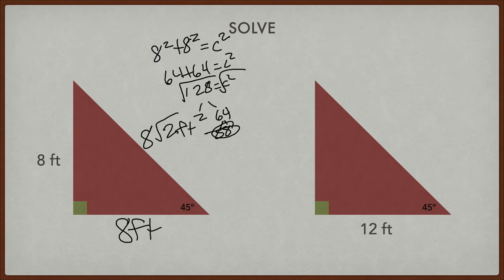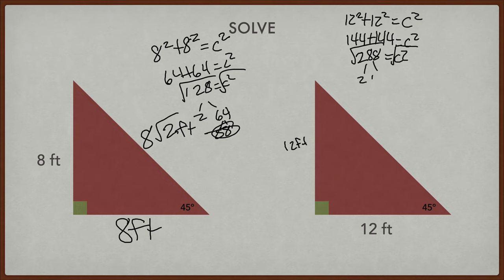Let's try this one. Once again, 45-45-90. We know that that's 12. So 12 squared plus 12 squared equals c squared. 144 plus 144 equals c squared. That's 288. This is c squared. We square root it. That's 2 times 144, which is 12 times 12. That means this is 12 square roots of 2 feet.